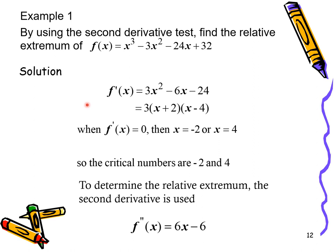There are five steps for solving optimization problems. Step 1: identify the variable to be maximized or minimized. Step 2: express it as a single-variable function y = f(x). Step 3: solve f'(x) = 0 to find critical values. Step 4: verify using the second derivative test. Step 5: find the optimum value y = f(x) if required.